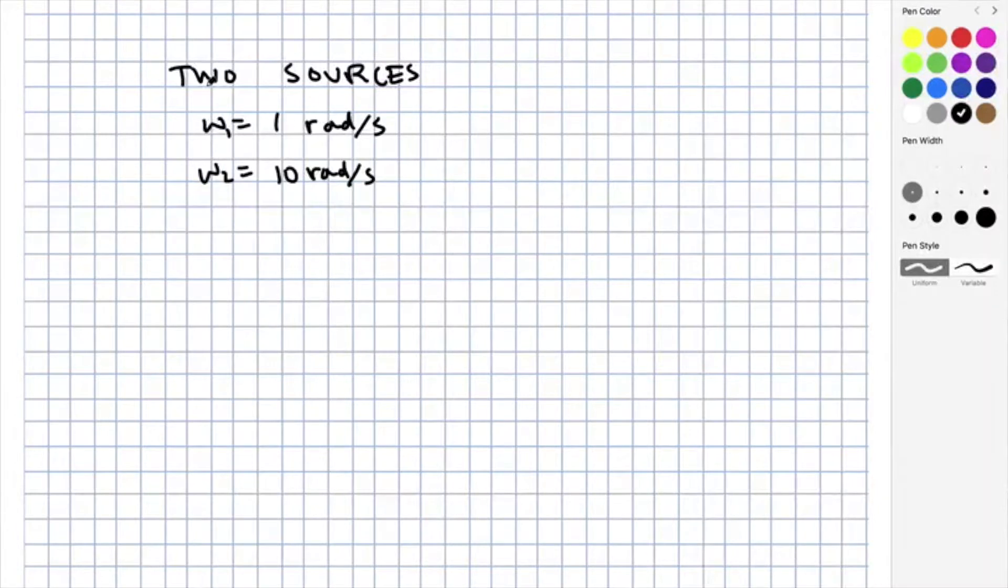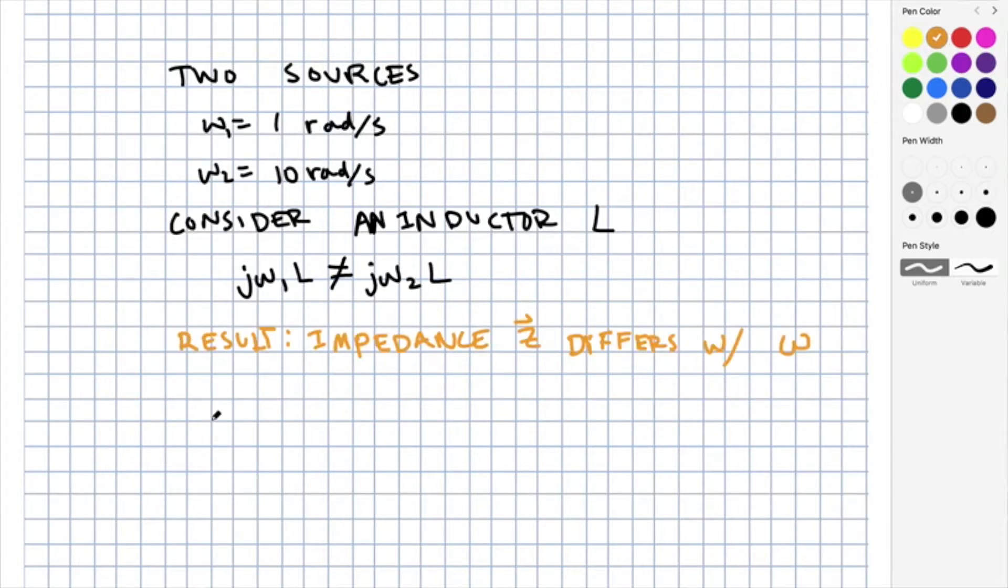In this discussion, I want to talk to you about superposition in AC. To motivate the need for superposition in AC, let's consider a circuit with two different sources. Each of these sources is going to have a different frequency. Let's say the circuit has a single inductor. We know that in AC, our first task is to convert to phaser domain. However, what we see is that the impedance in the inductor for the first frequency is absolutely different than it is for the second frequency. The impedance differs based on omega. As a result, we can't just use our standard AC nodal or mesh analysis techniques. We need to do something different.